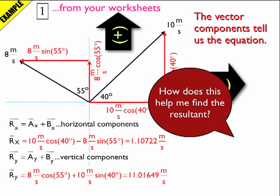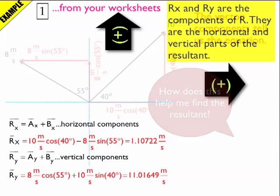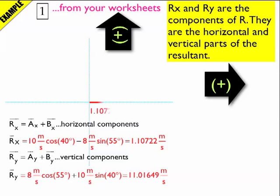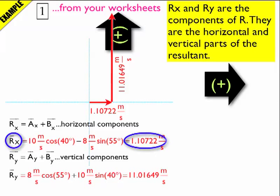Now I'll do a little bit of math on my calculator. Horizontally, I get 1.107 meters per second, and vertically I get 11.01 meters per second. The horizontal answer is positive, which means the arrow goes to the right. The vertical answer is positive, so it goes up. If I had a negative answer, I'd draw my arrow pointing in the negative direction. So here are the pieces — they're the components of my answer — and now I construct my final answer.